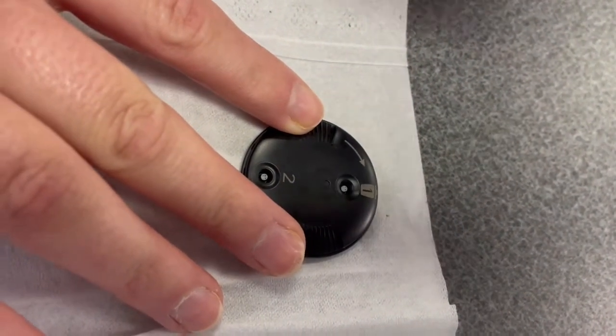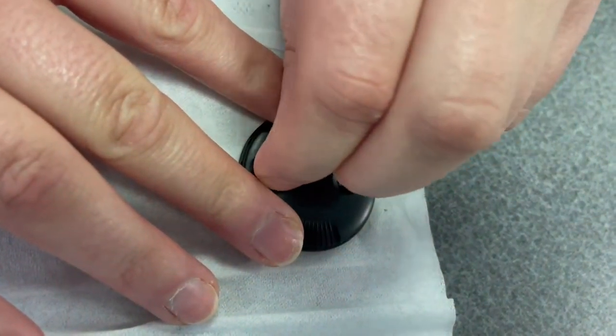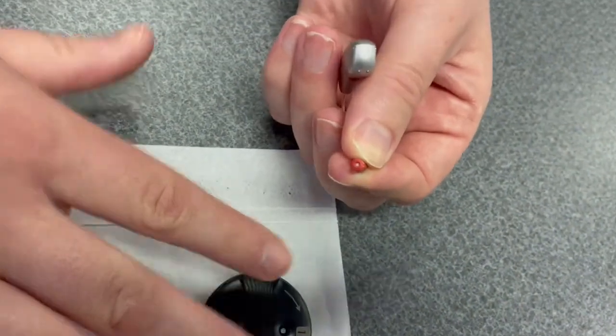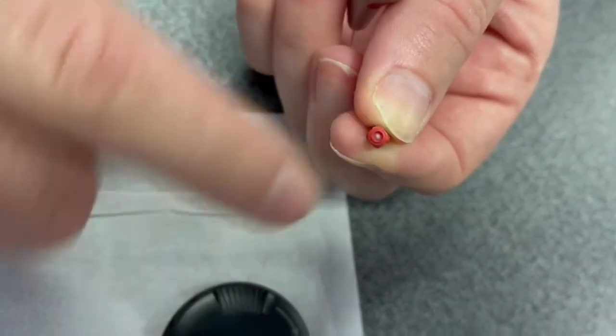Do the same thing for slot number two. Push it down in there. Once it clicks, pull it out. You've just replaced the wax guard in there.